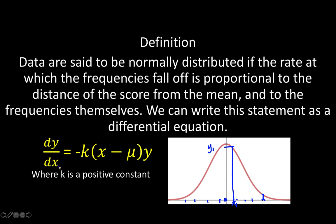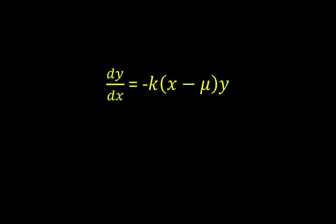Notice that as the distance of the x value becomes farther away from the middle, which is our mean, the height of the curve is also lesser. If the distance is closer to the mean, then the height of the curve is taller. So if we want to get the rate at which the frequency falls off with respect to the distance of the score from the mean, we arrive at this ordinary differential equation. The rate of change dy over dx equals the product of the distance of the score from the mean times the height y times a constant, with a negative sign because our curve is concave downward. Here k is a positive constant.